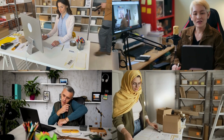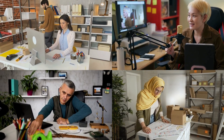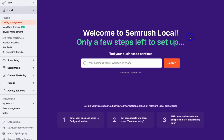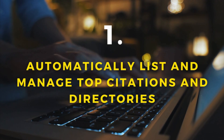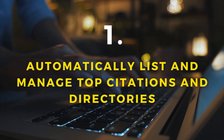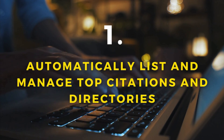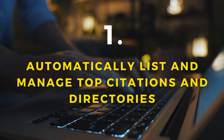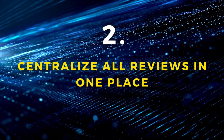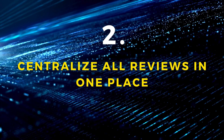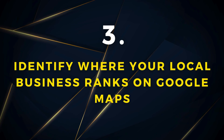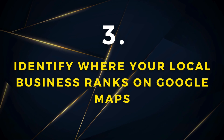There are three main features you can leverage inside SEMrush Local to benefit your local business and help it get discovered online. The first feature allows you to automatically list and manage your business on the top directories relevant to your business, saving you time manually managing listings across top directories and online citations — this is all about building authority online. The second feature lets you centralise all your reviews so you can quickly respond and manage Google reviews in one platform. The third feature allows you to identify where you stand on Google Maps.